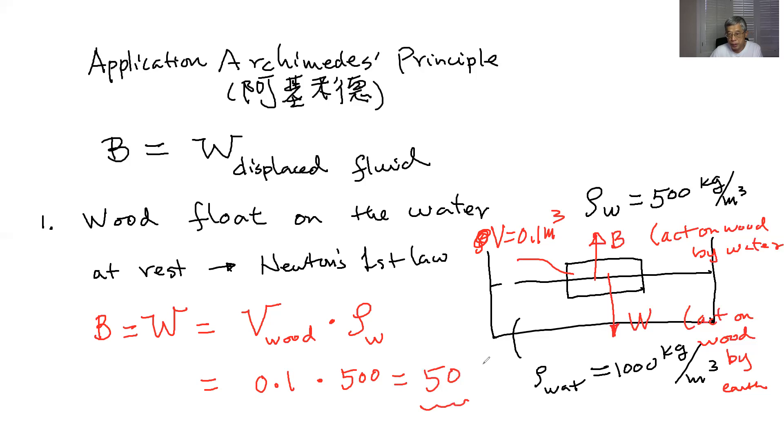So that's your buoyancy, and that's in Newtons. That will be your buoyancy on the wood, which is 50 Newtons. And your weight of the wood is also equal to 50 Newtons. So that's one application for Archimedes' principle. We're going to stop here. Bye-bye.